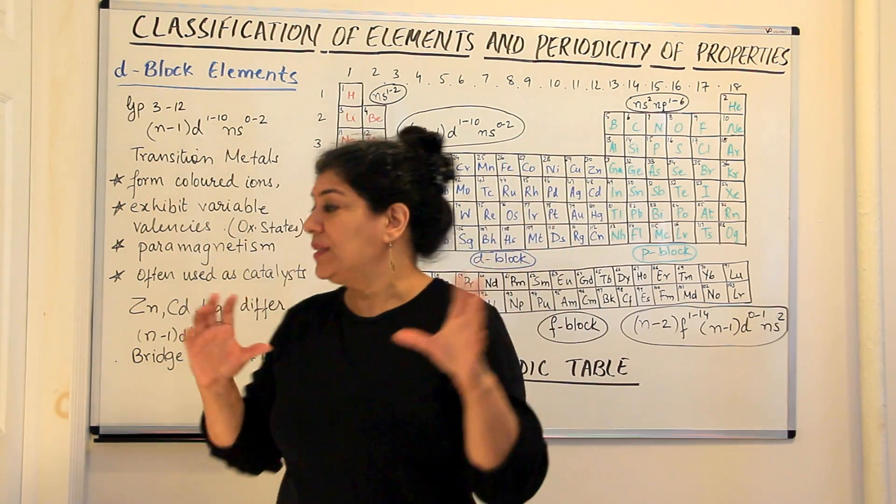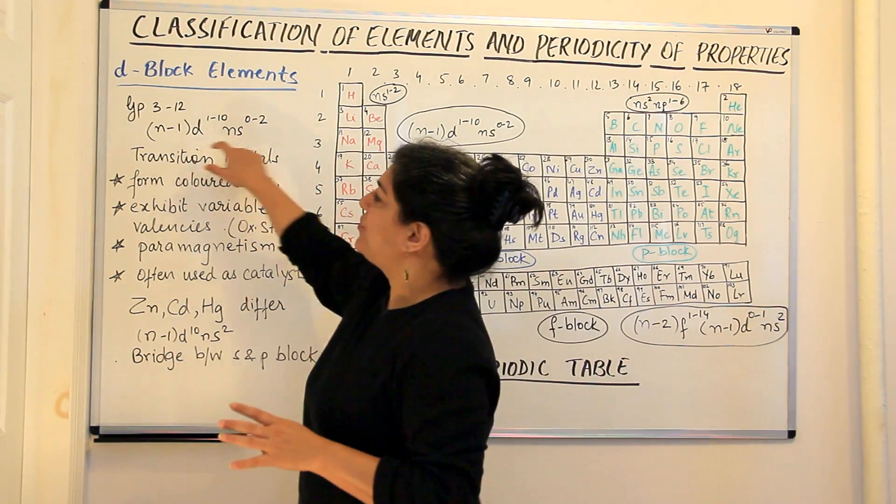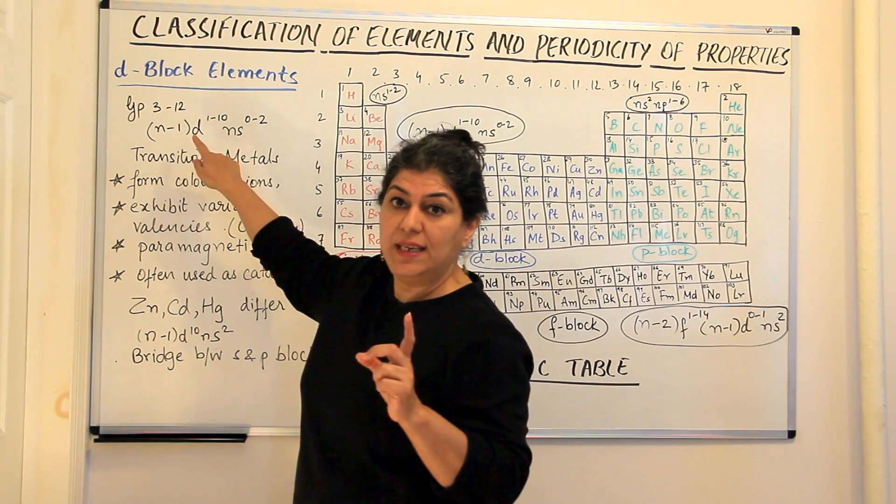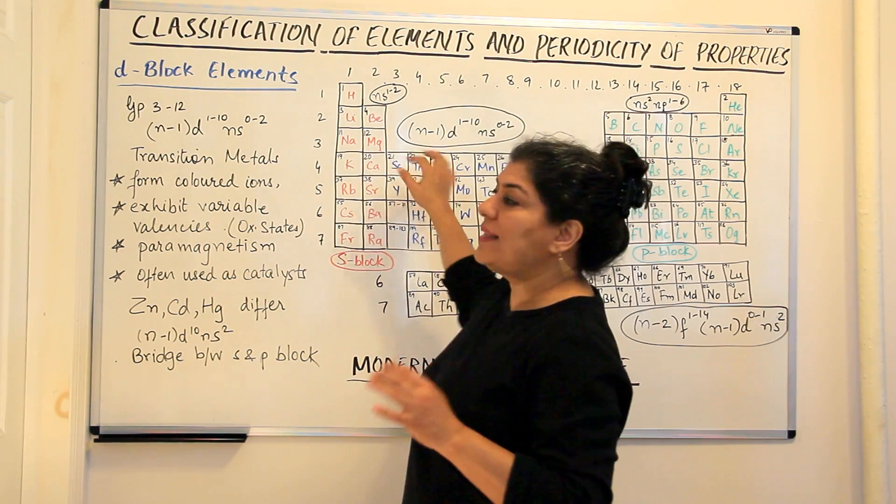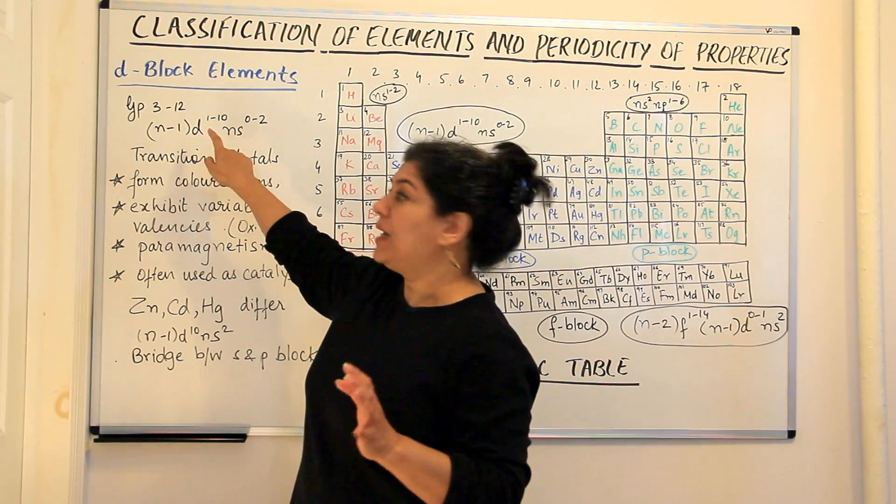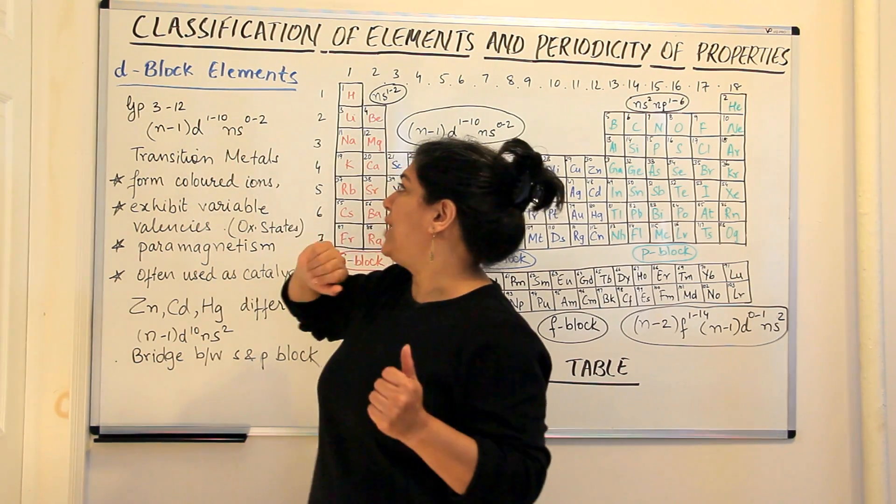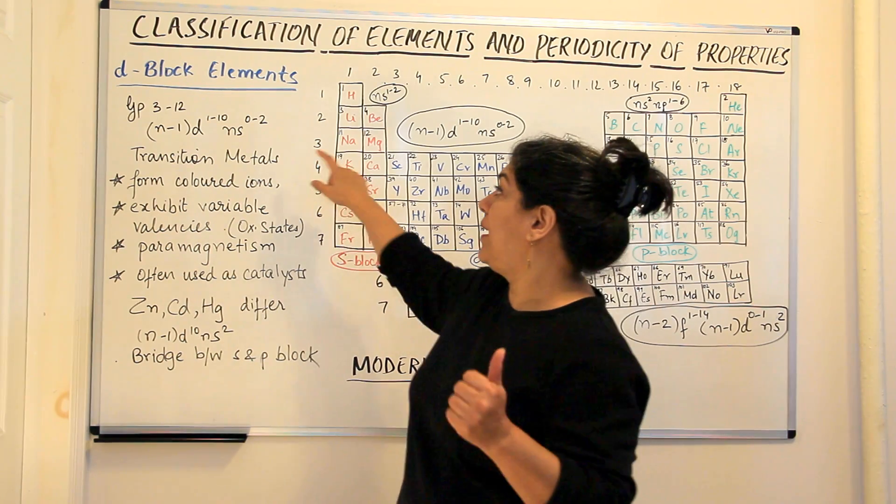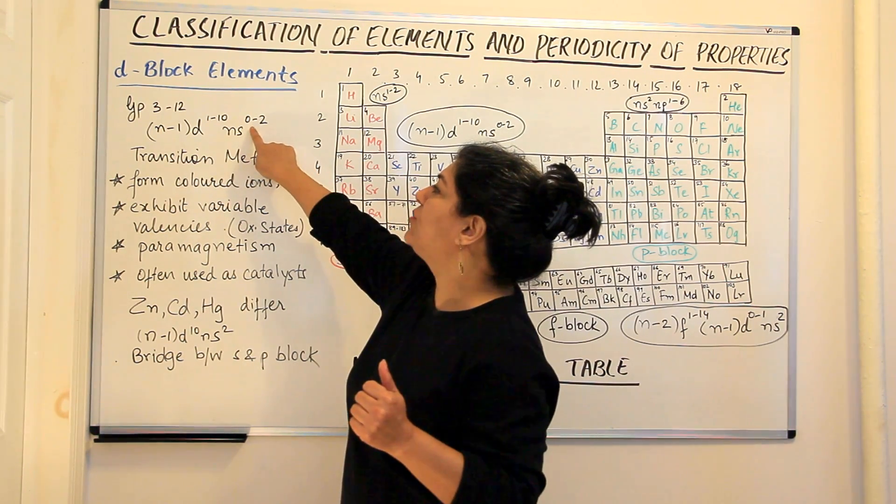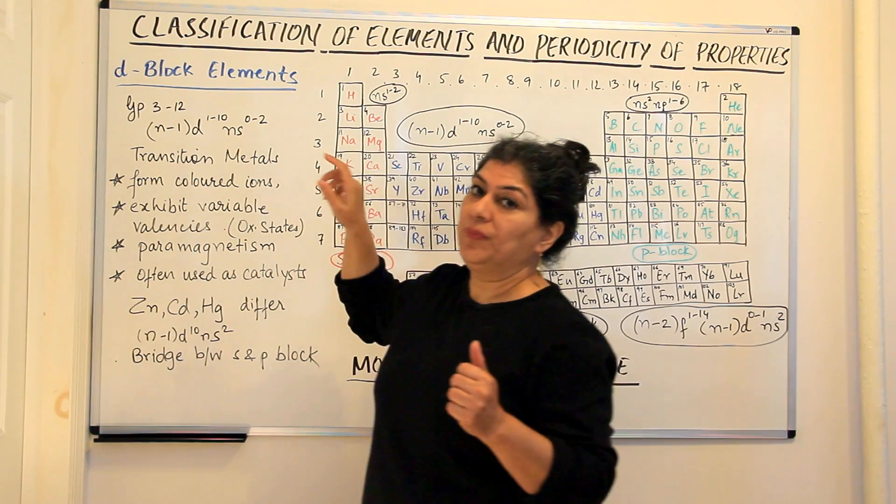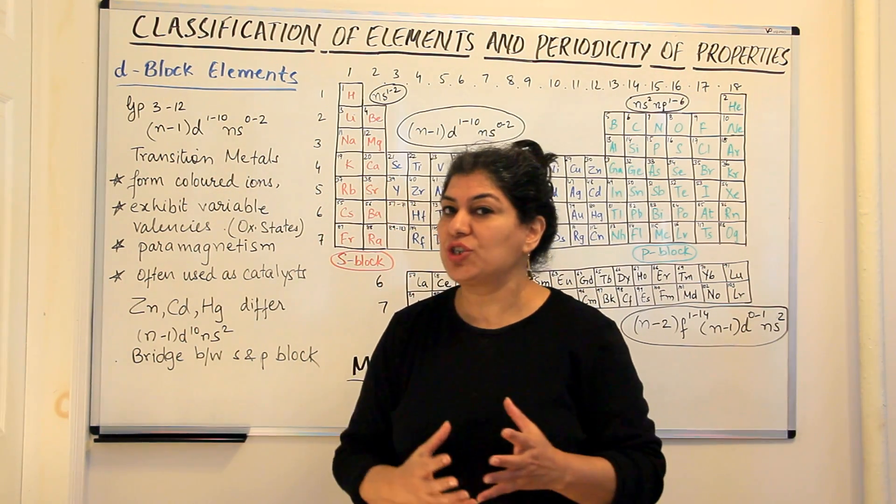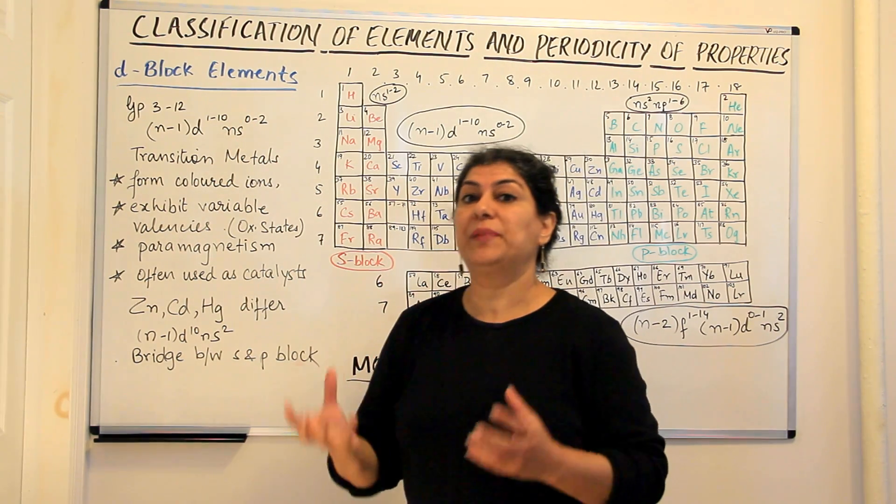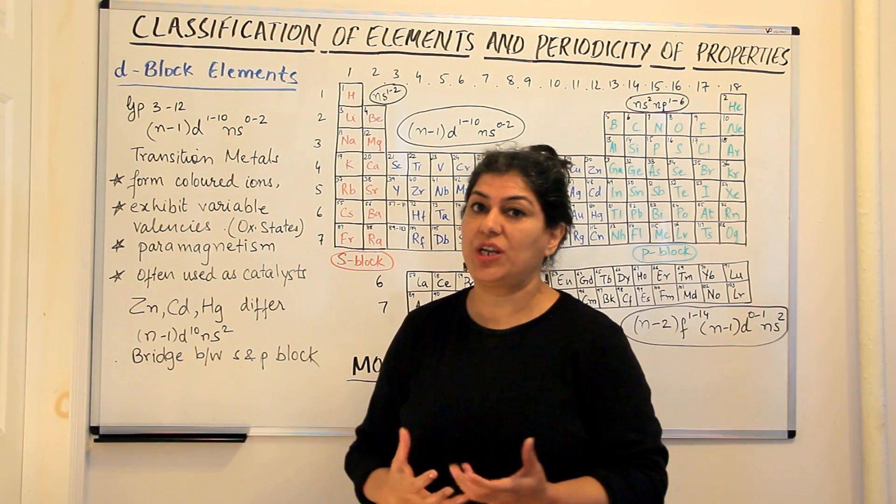Based on this, the general configuration of the transition metals is written as they have N minus 1 D, the D orbitals of one shell less than the outermost shell is being filled up and electrons range from 1 to 10. And Ns orbitals have electrons from 0 to 2. When I did electronic configurations with you, I explained the conditions when you have half filled and completely filled orbitals which are more stable.